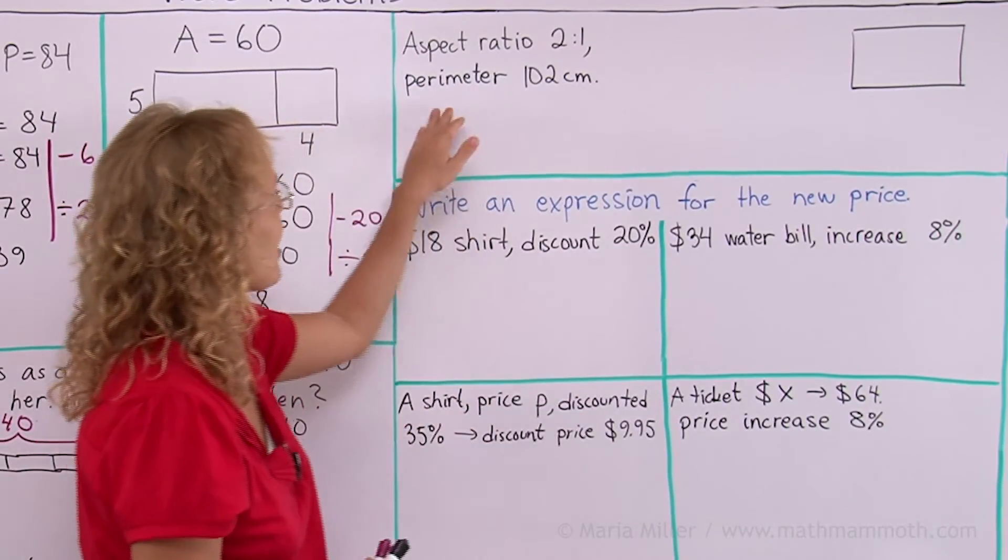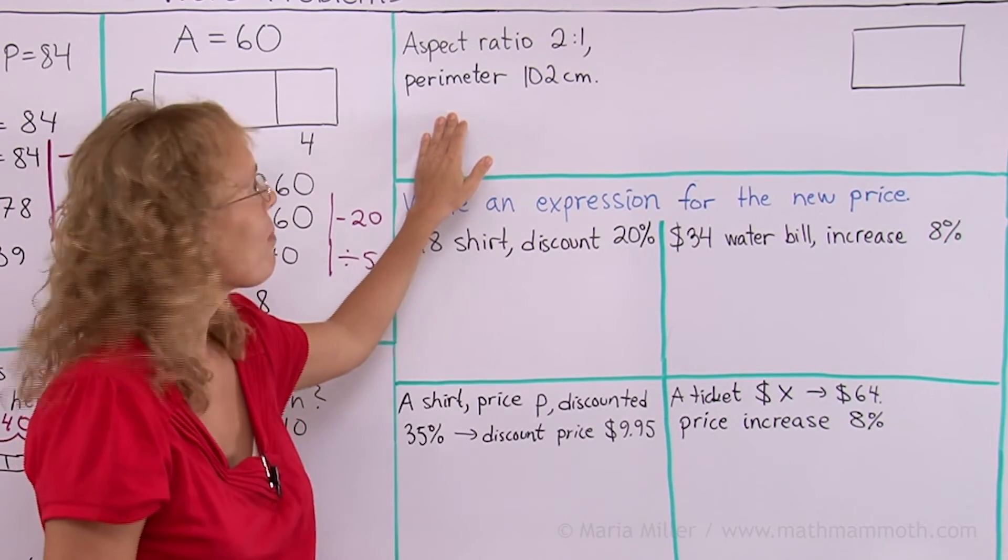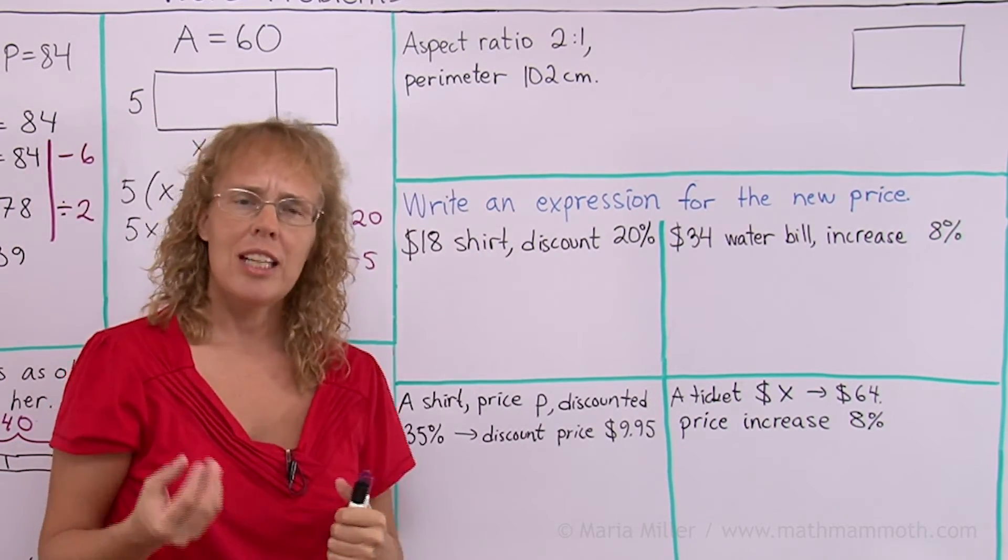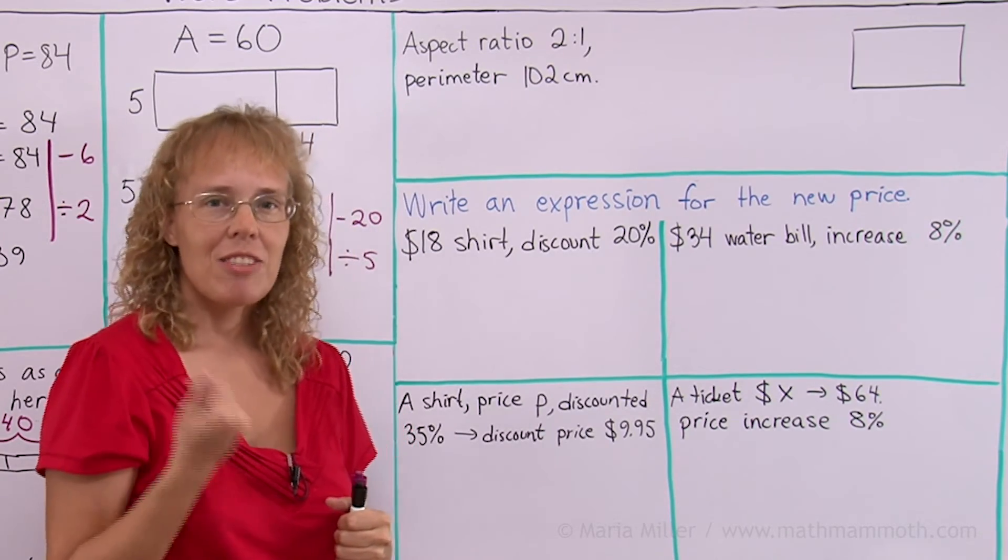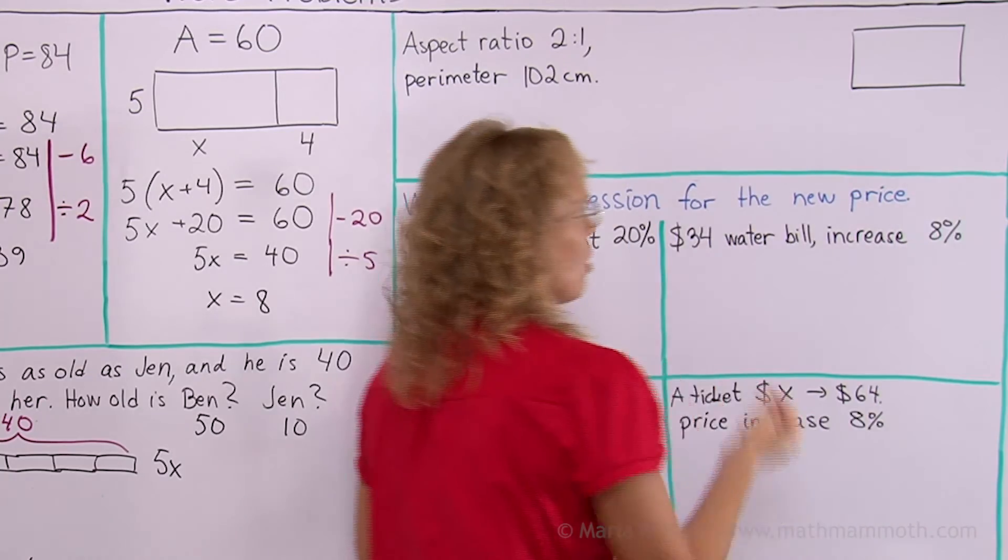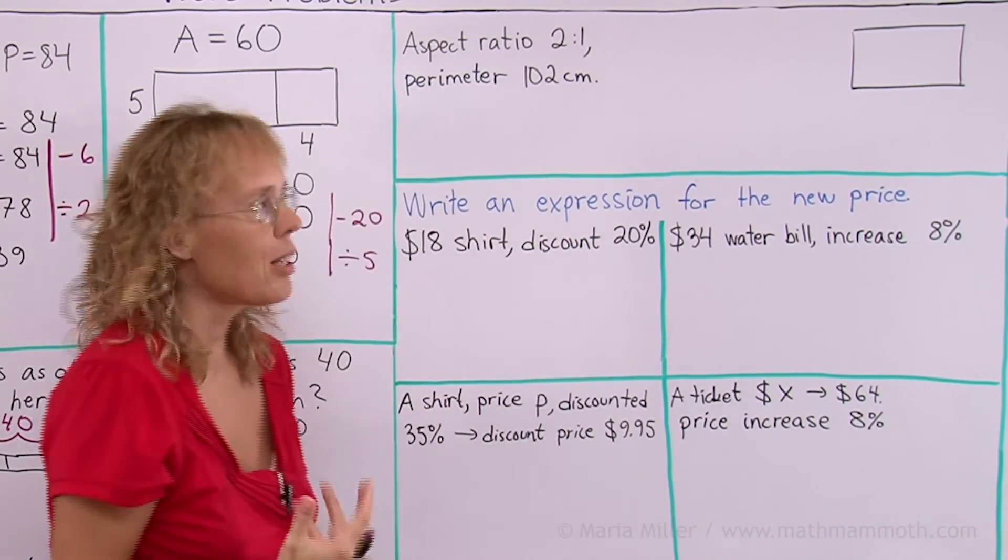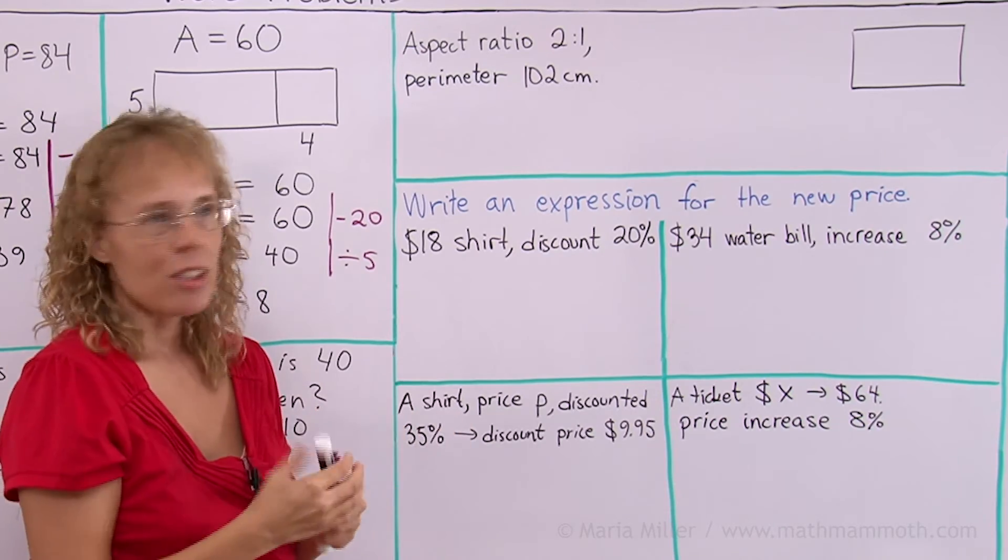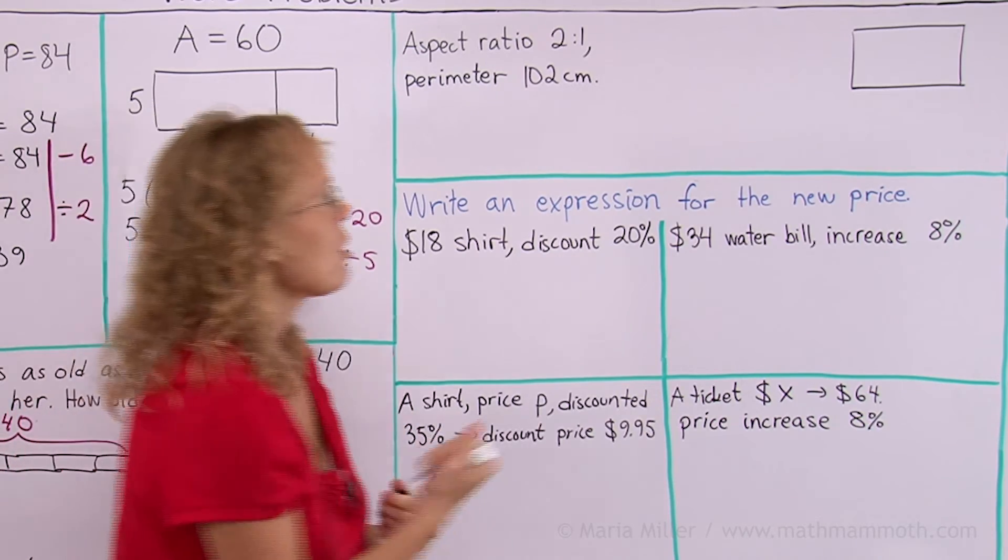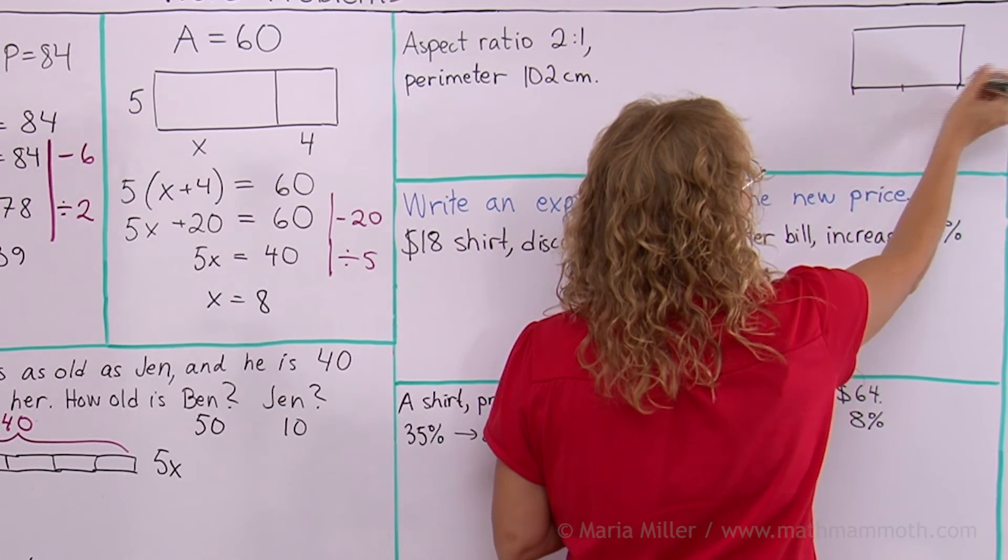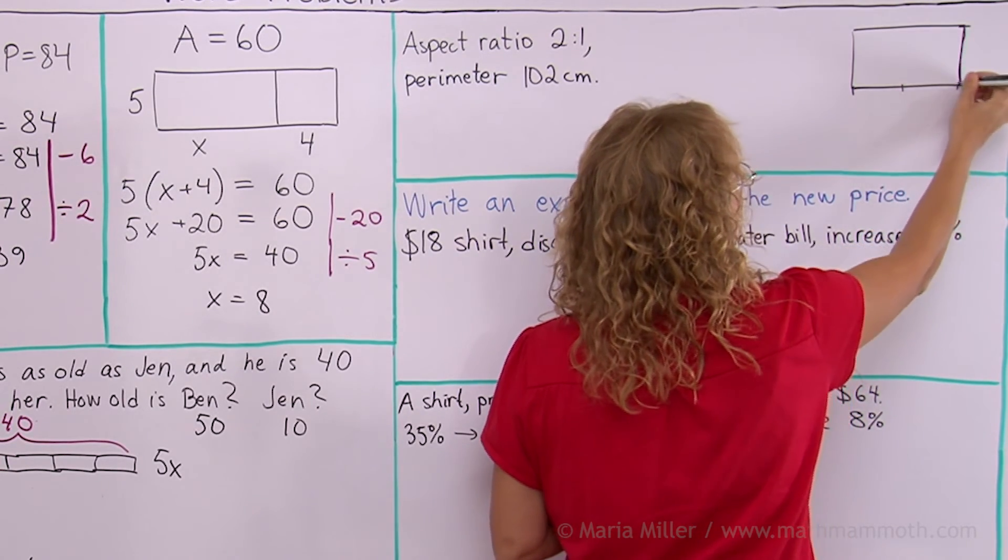Here, we have a rectangle with aspect ratio 2 to 1 and perimeter 102 cm. Now, what was the aspect ratio? It is the ratio of a rectangle's width to its height or width to length, whichever way you want to call it. So we can mark that in the picture using a unit of some sort. This is 2 to 1. So I will mark it as 2 units here and 1 unit here.